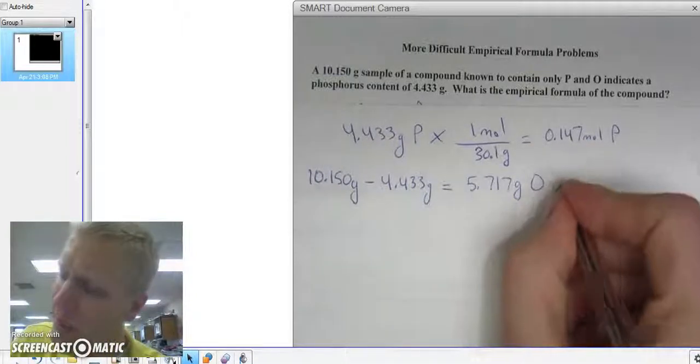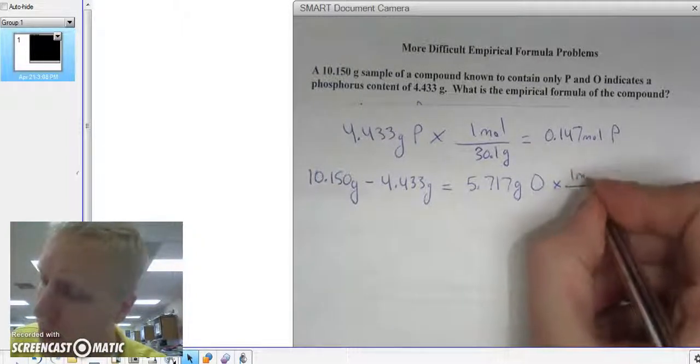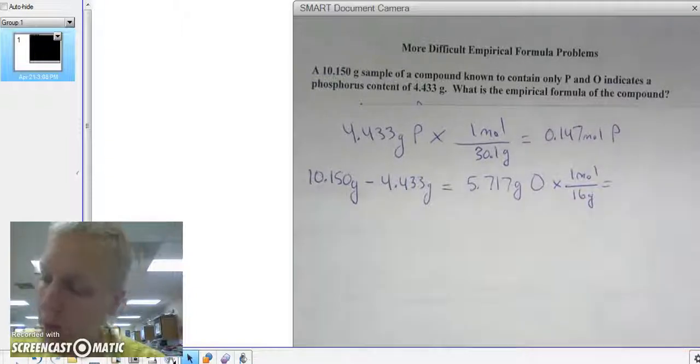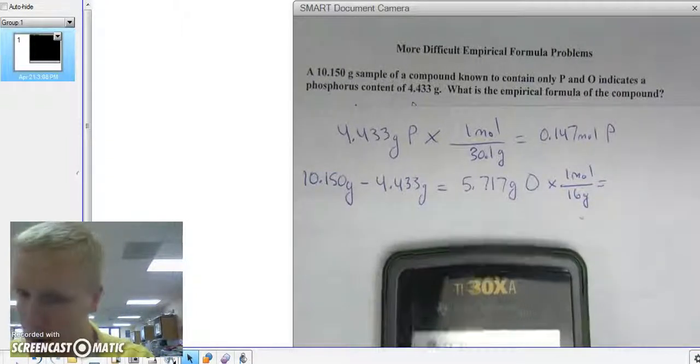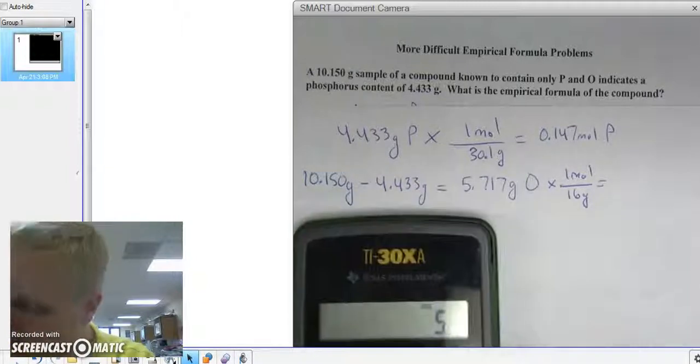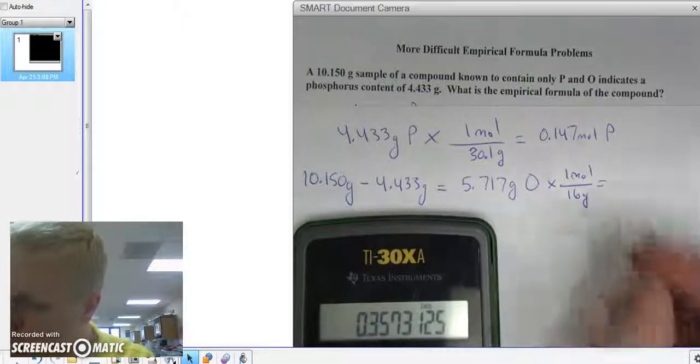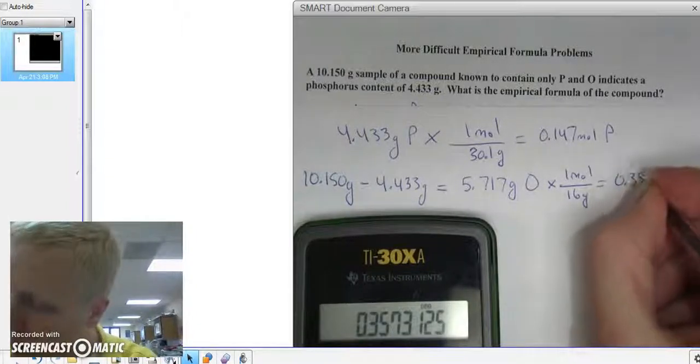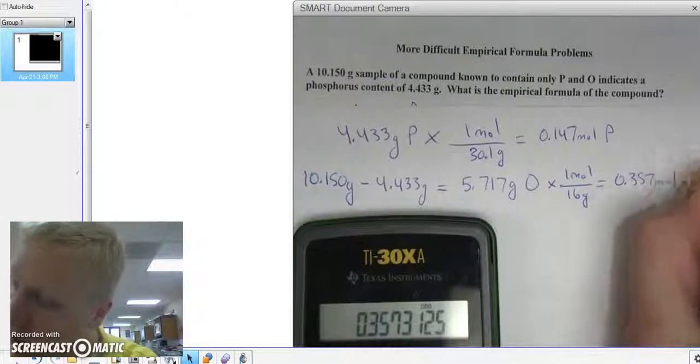I'm going to do the same thing with oxygen. Multiply it by 1 mole divided by 16 grams, which is the molar mass of oxygen. So we've got 5.717 divided by 16 equals 0.357 moles of oxygen.